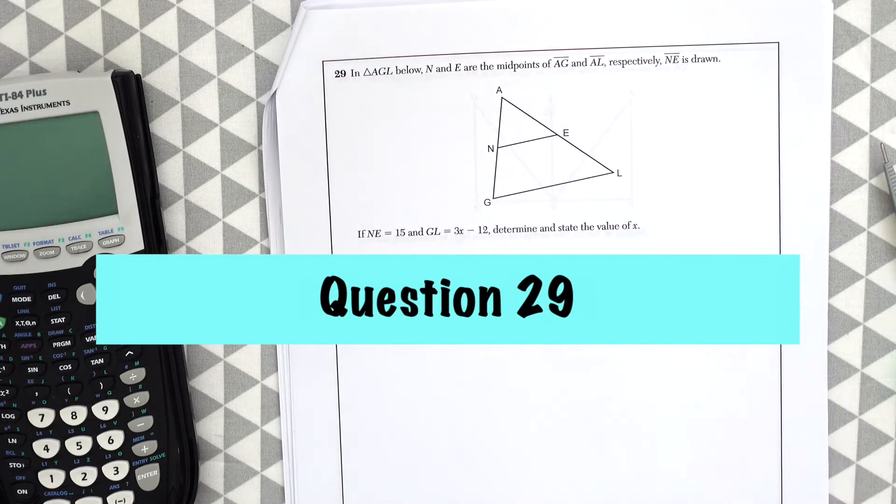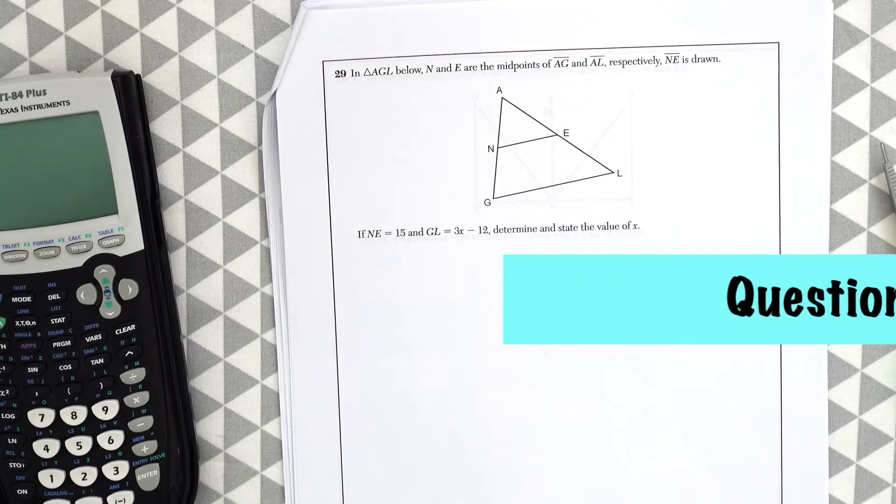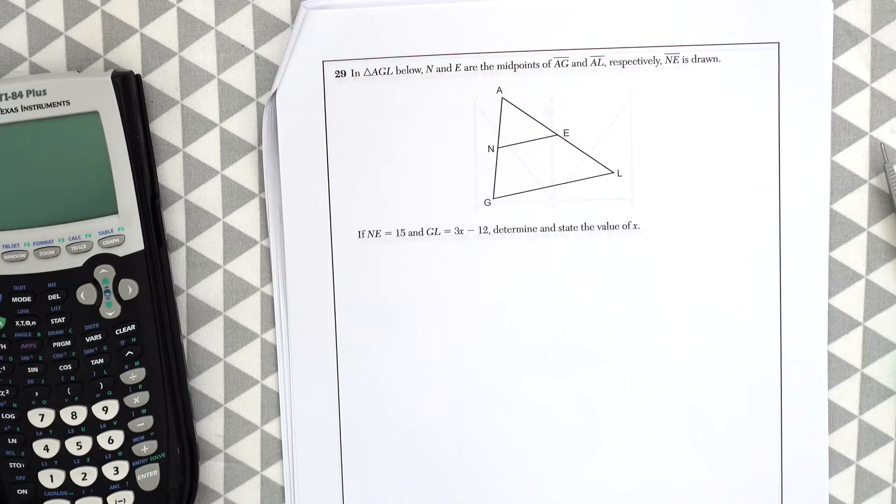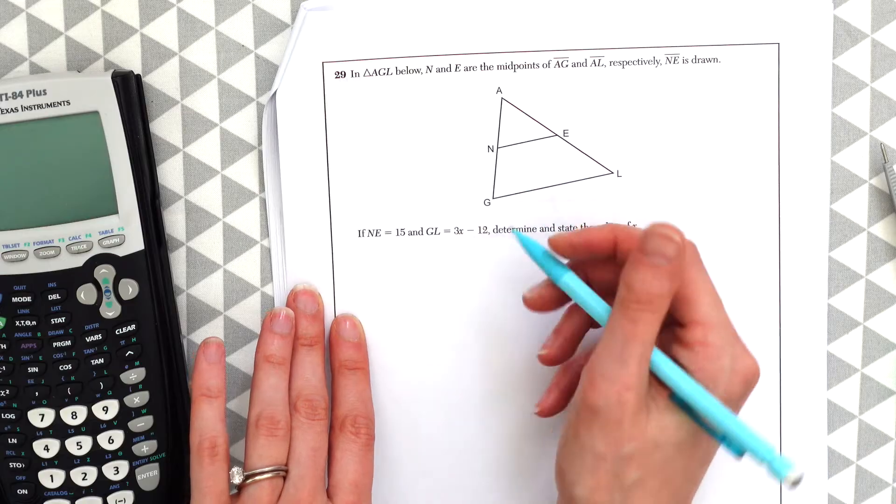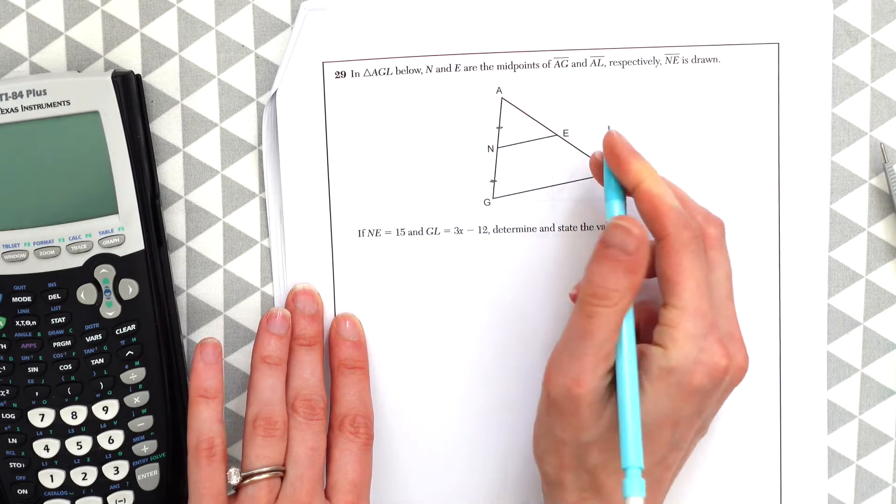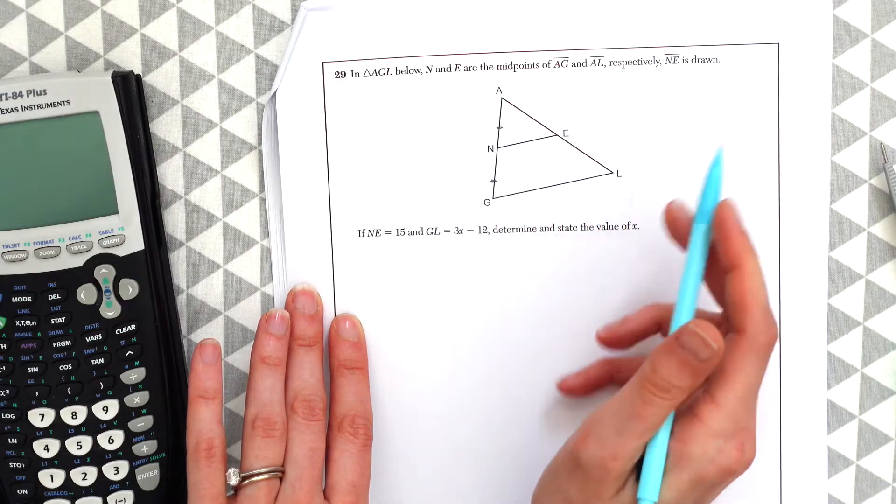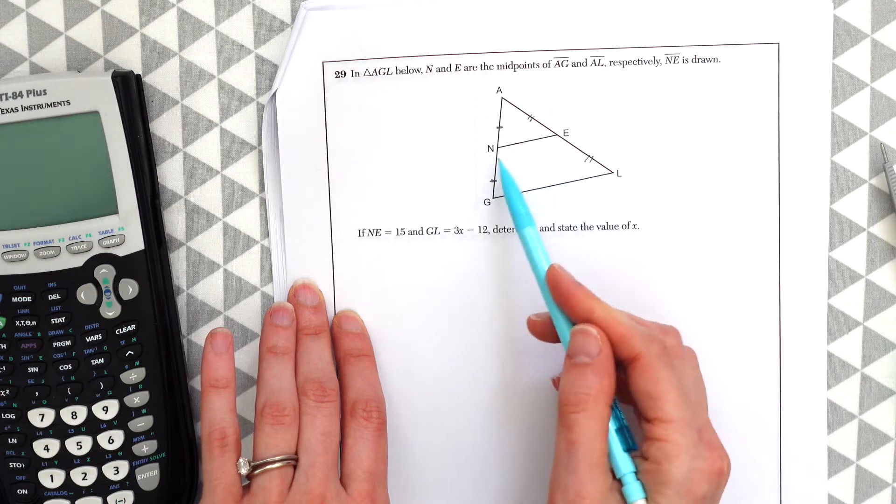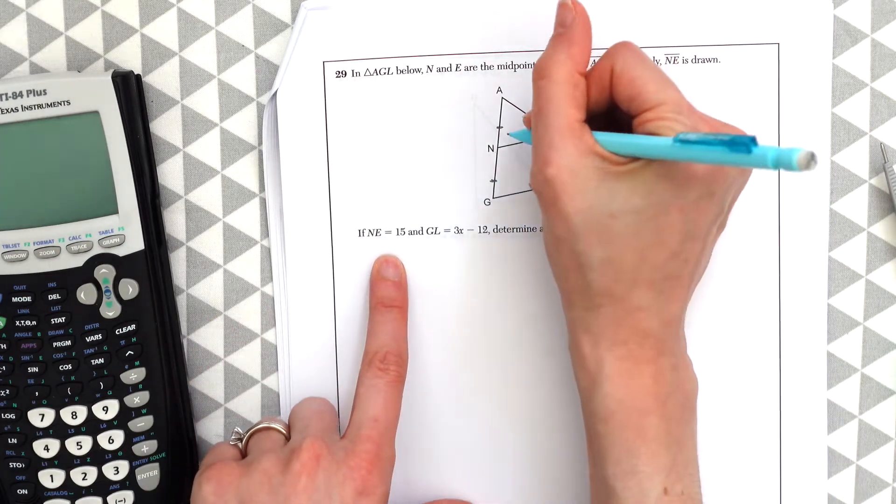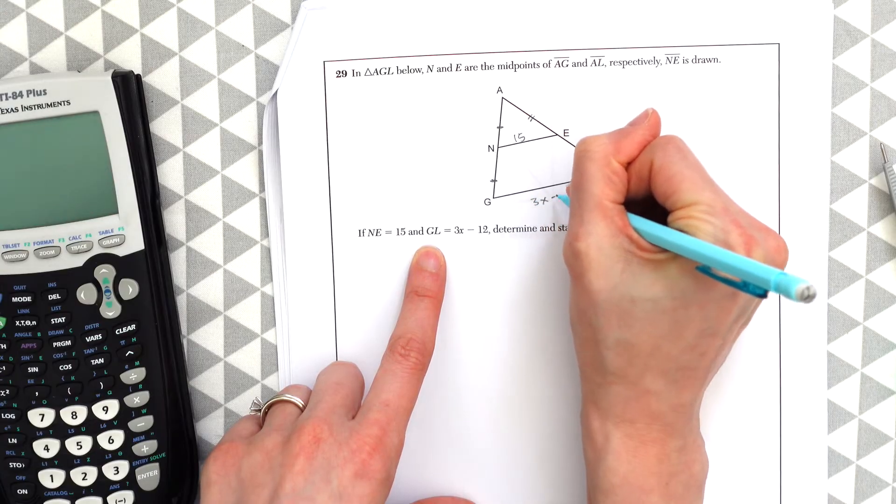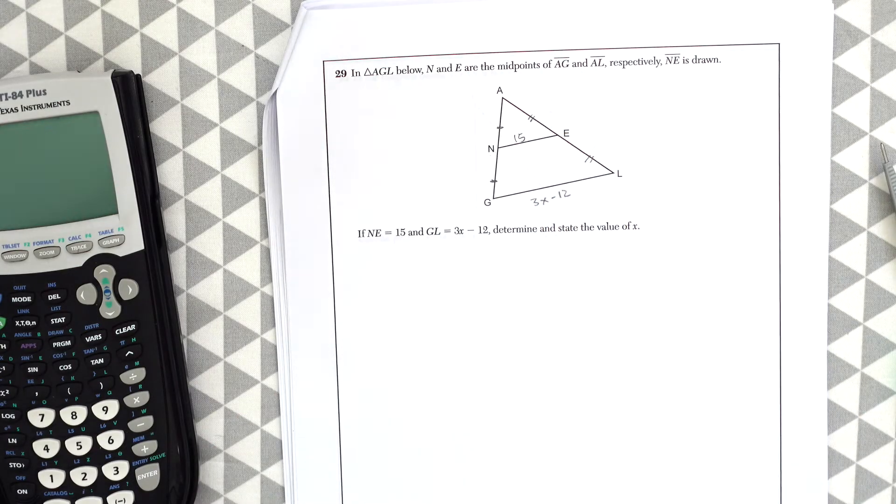Question 29. In triangle AGL below, N and E are the midpoints of AG and AL respectively. NE is drawn. So this means that N is the midpoint of AG. So that means this is going to split this segment in half. And E is the midpoint of AL. So it's going to split this segment in half. And then this line is drawn. If NE equals 15, GL is 3x minus 12, determine and state the value of x.